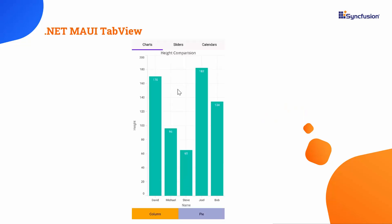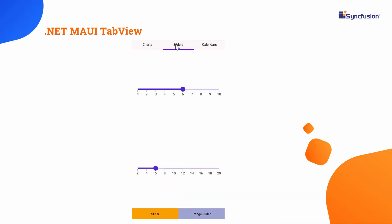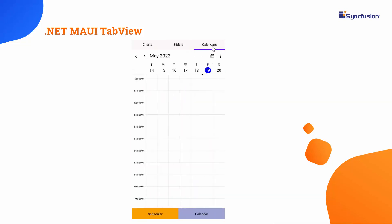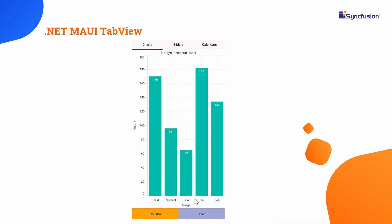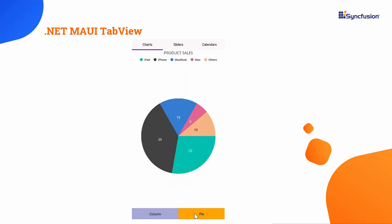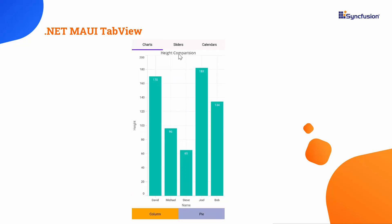The first level of tabs shows categories such as charts, sliders, and calendars. Each category can have its own set of tabs with specific controls.